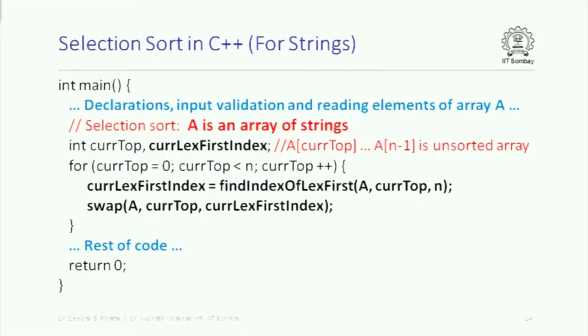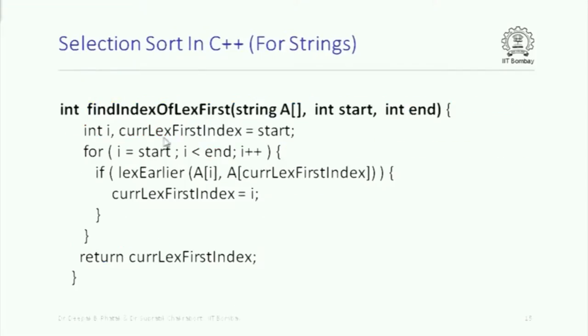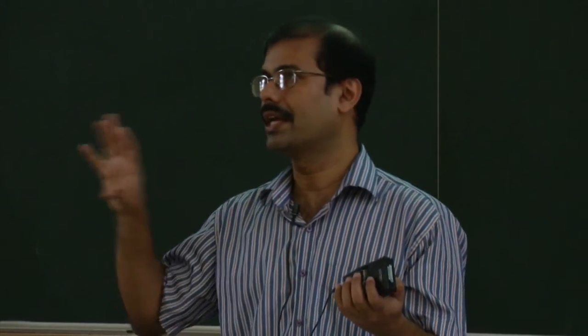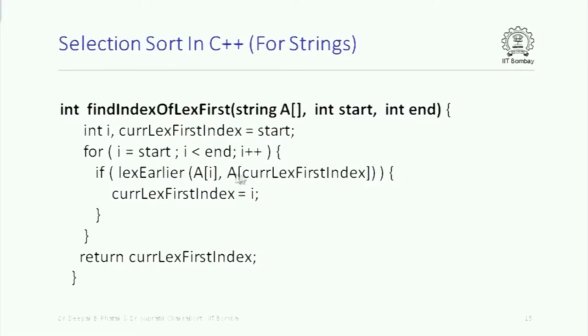It is as simple as that. To find the index of the lexicographically first element, we iterate over the part of the array. Earlier we compared whether a[i] was greater than a[current_index_max]; now we check if a[i] is lexicographically earlier than a[current_lex_first_index]. That is the only difference — instead of using the greater-than comparison over integers, we use the lexicographic ordering over two strings.